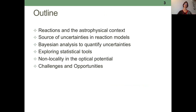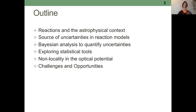Today I'm talking about the Bayesian analysis of reactions. I'll start by providing some context and highlighting why reactions are of astrophysical relevance. Then I want to discuss the sources of uncertainties that we're facing, talk about the ABC of Bayesian analysis, discuss some statistical tools that might help in exploring the extraction of the optical potential, and finally wrap up with some perspectives, including non-locality in optical potentials and other challenges and opportunities.